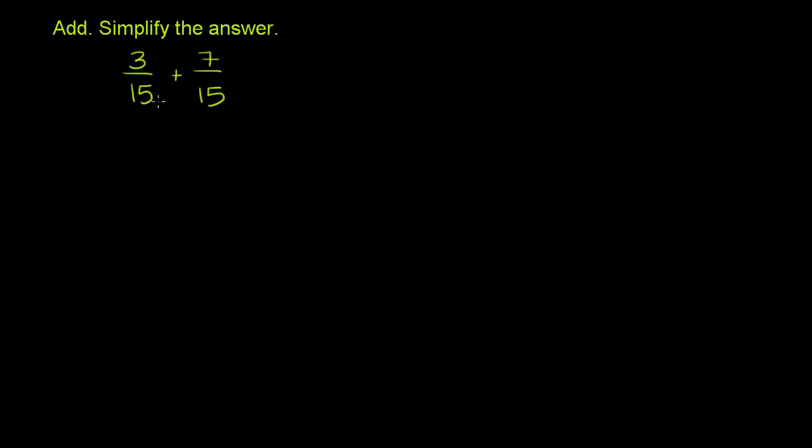We're asked to add 3/15 plus 7/15, and then simplify the answer. So the process when you add fractions is if they're not mixed numbers, and neither of these are, and if they have the same denominator—in this example the denominators are already the same, the denominator is 15.